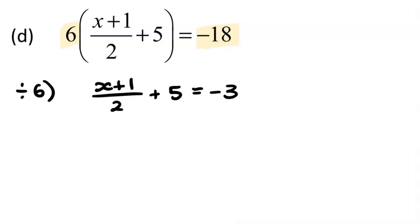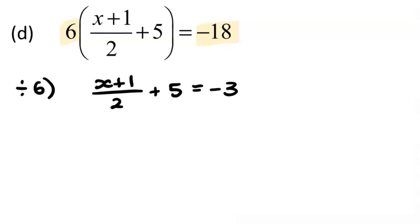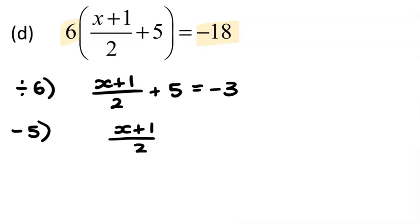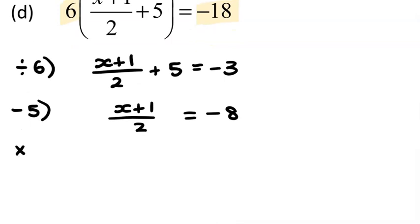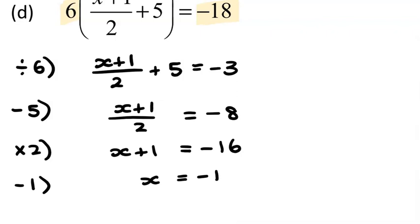Looking at this now, we need to subtract 5 from both sides. We could multiply everything by 2 now, but we'd also need to multiply that plus 5 along with the minus 3 and the fraction — so it's a little easier to take that 5 away first. So x plus one-half equals negative 3 minus 5, which is negative 8. Now multiply everything by 2: x plus 1 equals negative 16. Then subtract 1 from both sides: x equals negative 17.